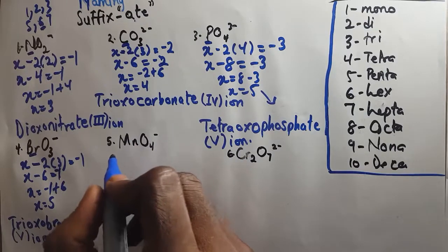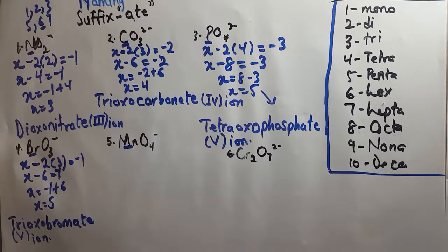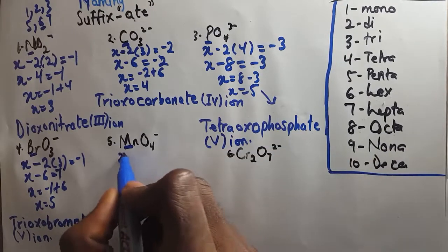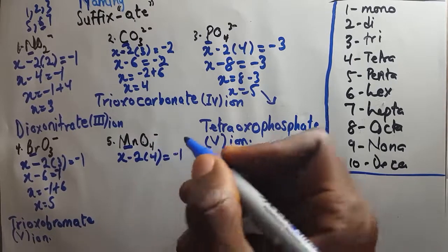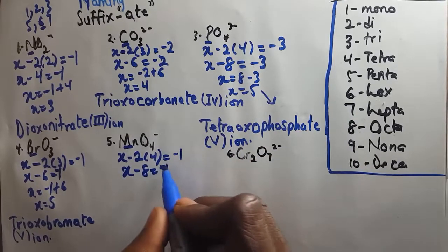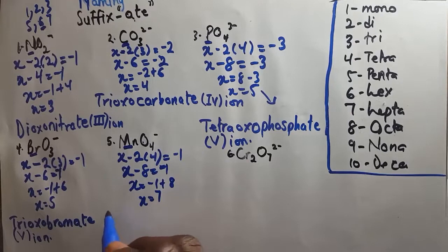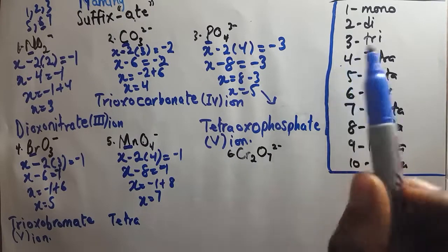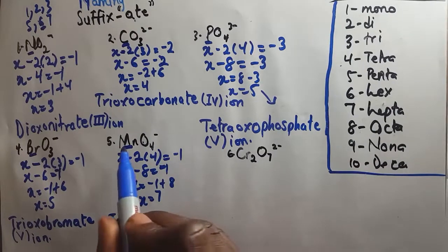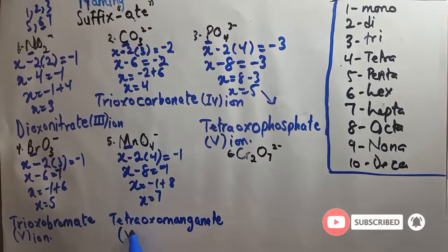The fifth example is MnO4 minus, manganese. When the elements are 3, find the oxidation number for the one in the middle; when there are 2, find it for the one on the left. Represent with X: X plus (−2 × 4) equals negative 1. X minus 8 equals minus 1. X equals minus 1 plus 8, so X equals 7. The name is tetraoxomanganate(VII) ion — tetra because there are 4 oxygen atoms, oxo for oxygen, manganate with the -ate suffix, and Roman numeral VII for 7.